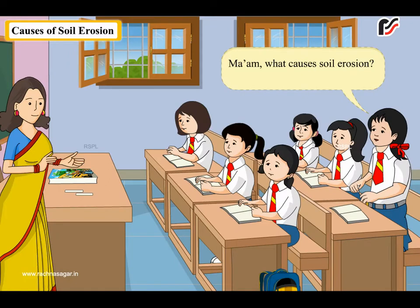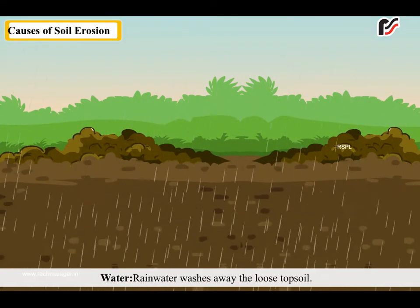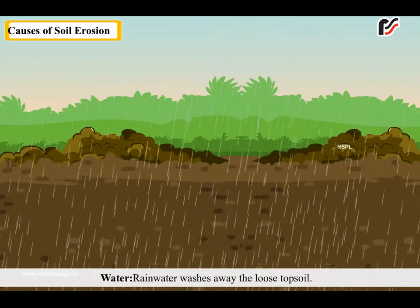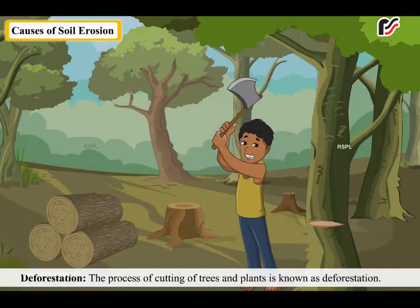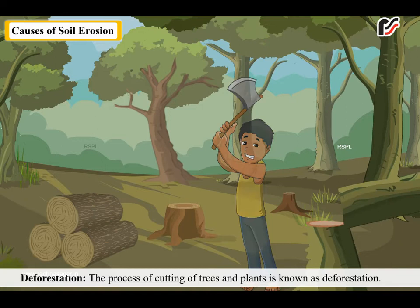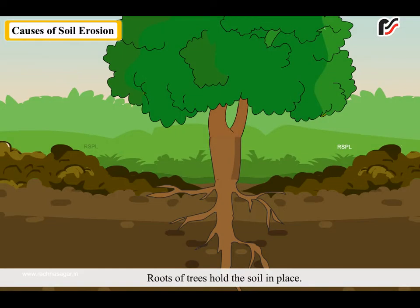Ma'am, what causes soil erosion? Wind — strong winds carry away a good amount of loose topsoil from place to place. Water — rainwater washes away the loose topsoil. Running water during floods carries more topsoil to rivers to form silt. Deforestation — the process of cutting off trees and plants is known as deforestation. Roots of trees hold the soil in place, thus they prevent the soil from being washed off.